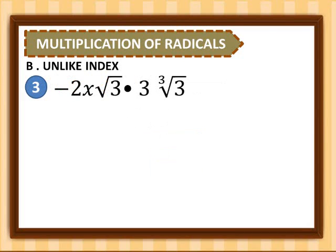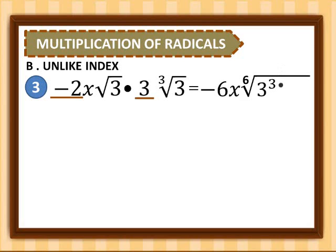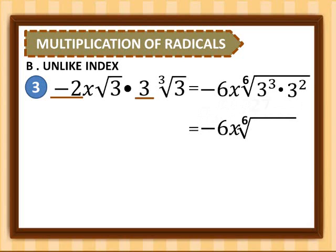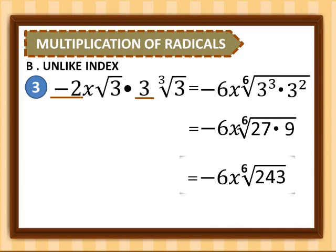Number 3: negative 2x times square root of 3, multiplied by 3 times cube root of 3. We multiply the coefficients: negative 2x times 3 gives us negative 6x. Then we multiply the indices to get 6. Inside, we have 3 cubed times 3 squared. 3 cubed is 27 and 3 squared is 9; 27 times 9 is 243. So for number 3, we have negative 6x times the 6th root of 243.